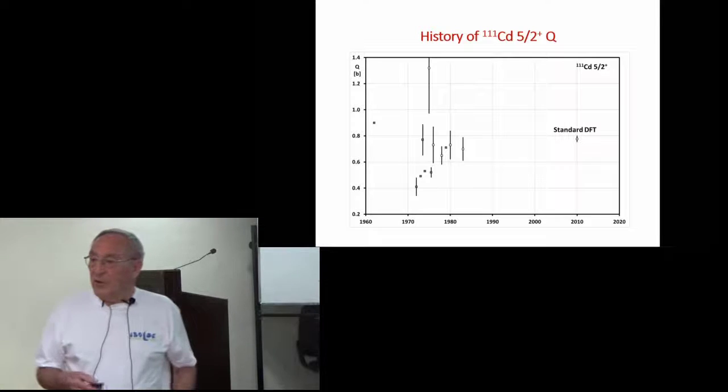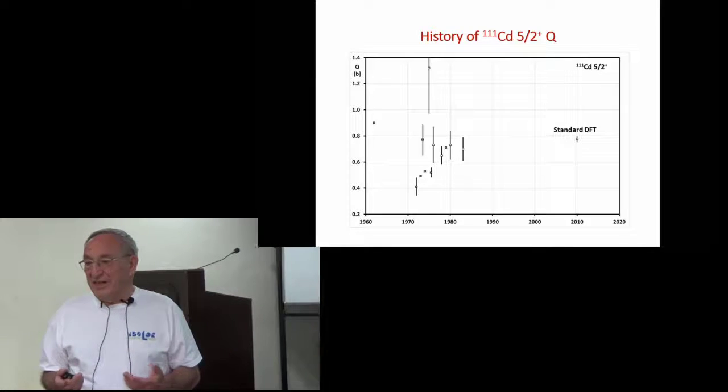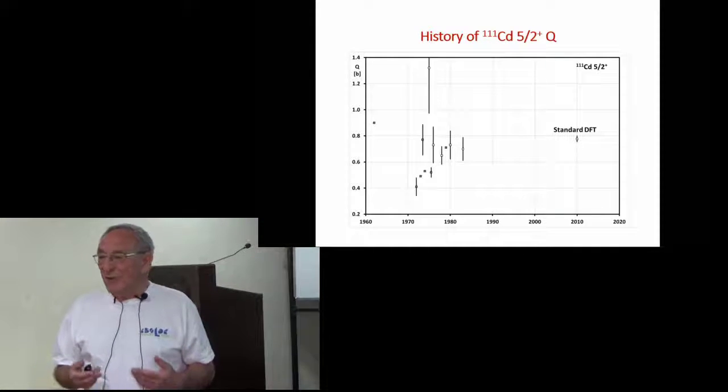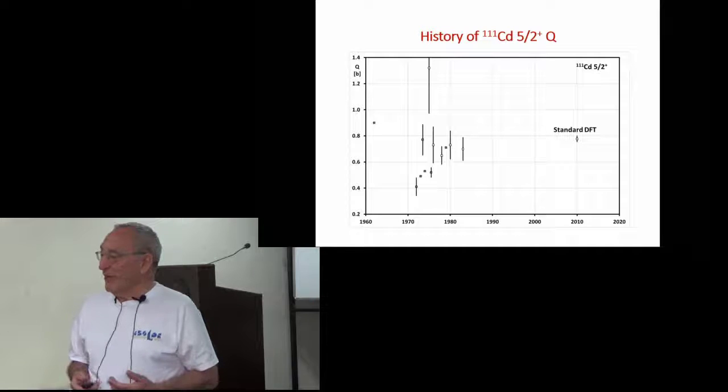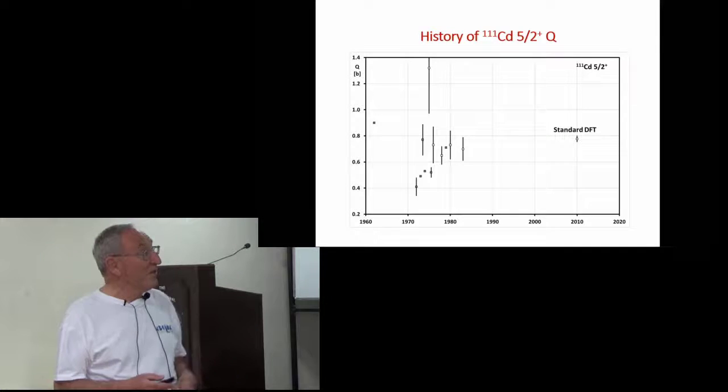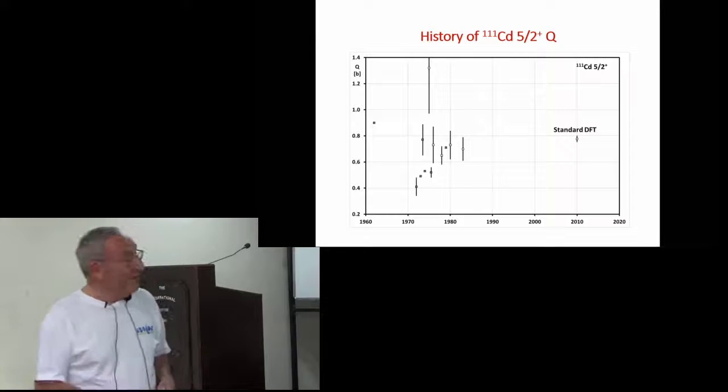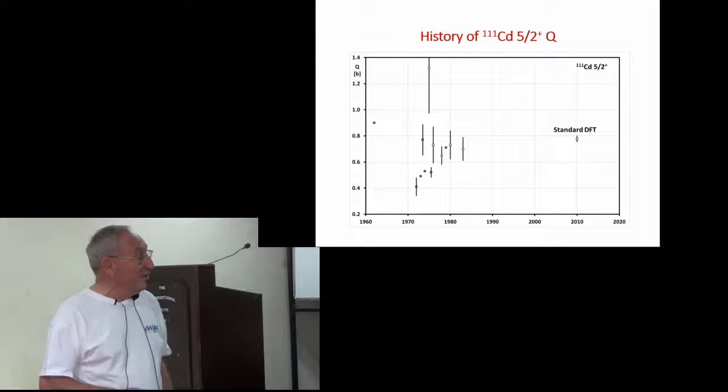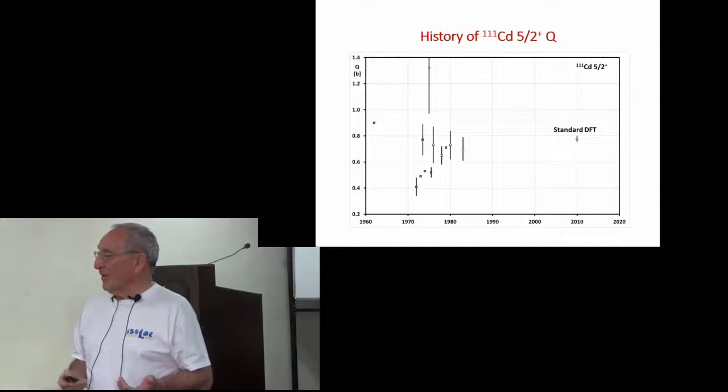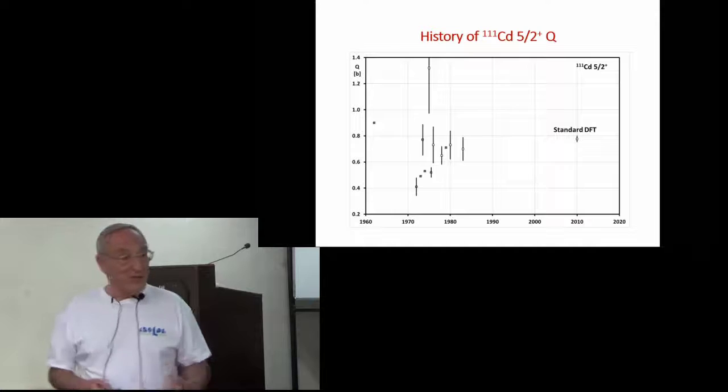This is the nuclear quadrupole moment of the state that is mostly used or efficiently used in perturbed angular correlation - that's the 5.5+ state in 111 cadmium. And there have been many, many estimates. Some of the points, a couple I think are mine also from the old times, with very big errors, rather high uncertainty.